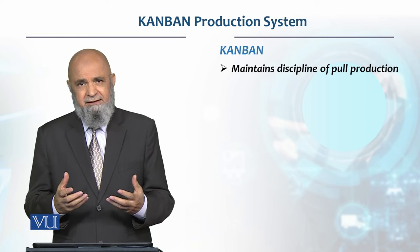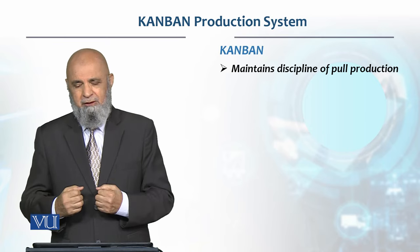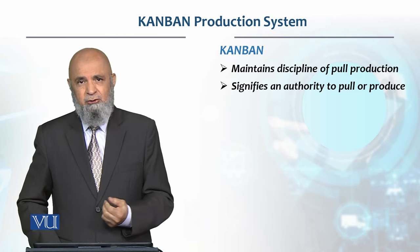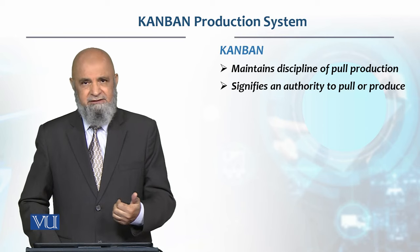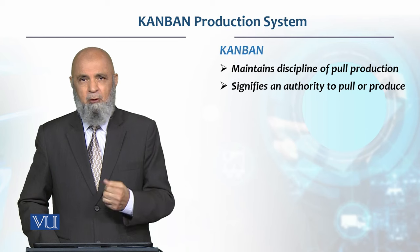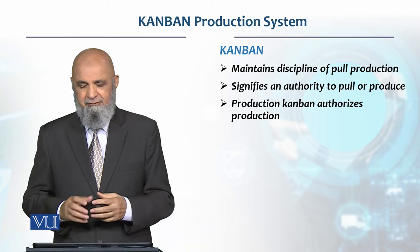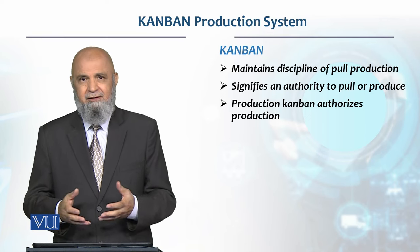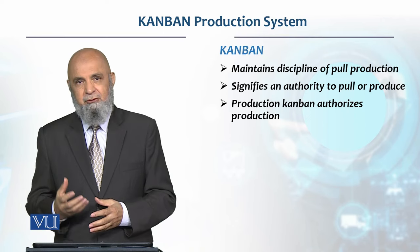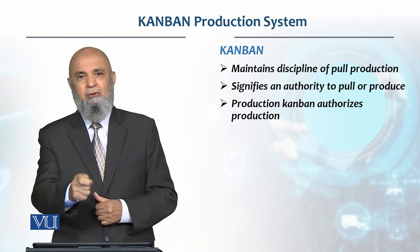In Kanban, a pull system is used — an order is placed only when material is needed, so demand pulls the material. There are usually two cards in Kanban. A single-card Kanban system also exists, but the two-card system is more popular. One card authorizes the production of the material.